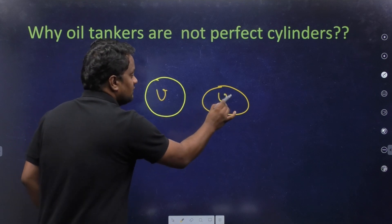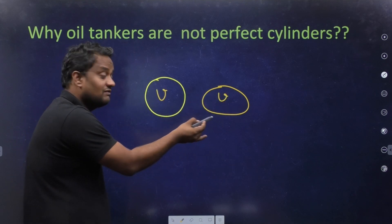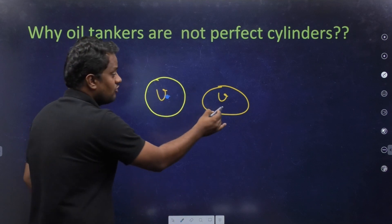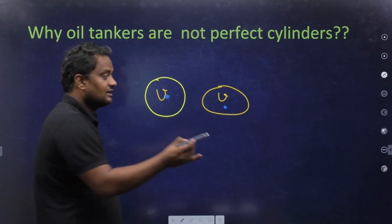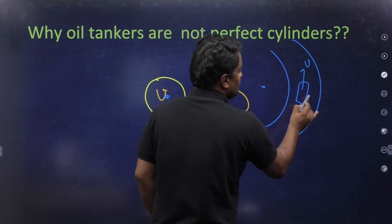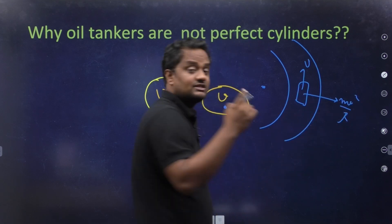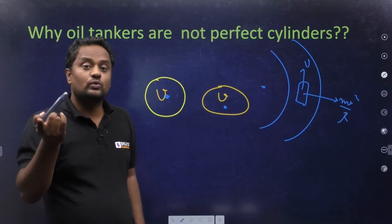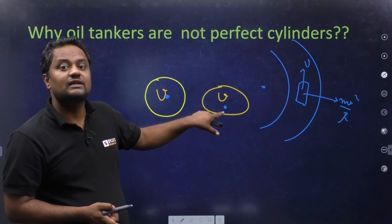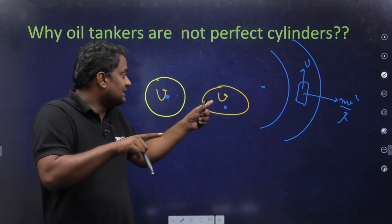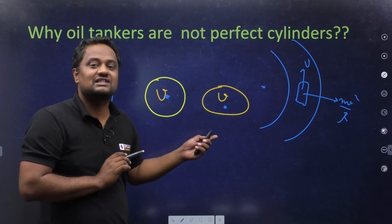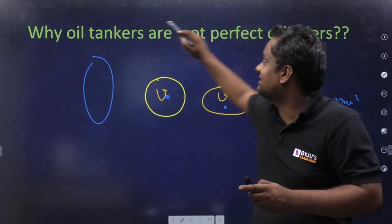For the same volume V, the CG of the elliptical shape with a horizontal major axis is lower than that of a perfect circle. When a vehicle moves in a horizontal curve with velocity V, the centrifugal force is MV²/R and the overturning moment is MV²/R × H. Since CG height H is lesser for the elliptical shape with the same volume, the overturning moment is less. That is why a perfect cylinder is not used — this is the title concept of today's video.